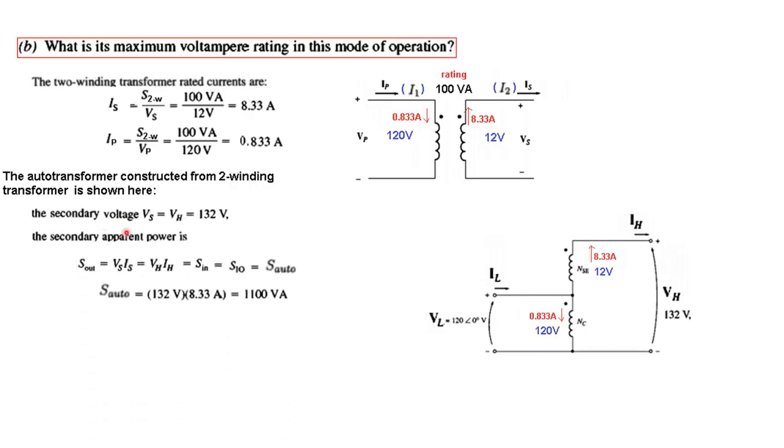Now the secondary voltage we found out to be 132 volts. This one. You can also get it directly by adding the two 120 plus 12, 132. The secondary apparent power or S out can be written as V secondary I secondary or V high I high from here which should also be equal to the input power which is also called S input and which also I am calling it S auto.